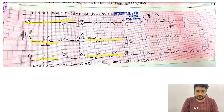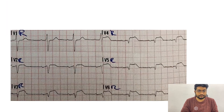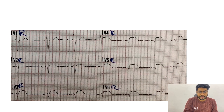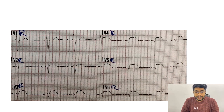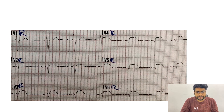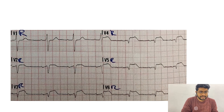These are our RV infarct leads — we put 'R' in front of V1, V2, V3, V4, V5, and V6: these are our right-sided leads. We reversed the ECG leads on the precordium, and we start seeing elevation from V3R to V6R. This confirms our diagnosis of right ventricular infarct.